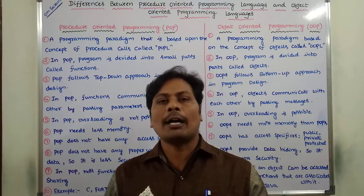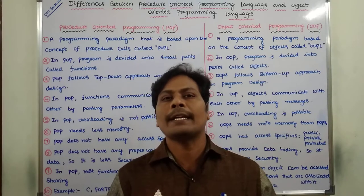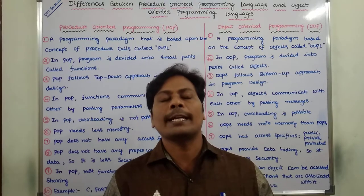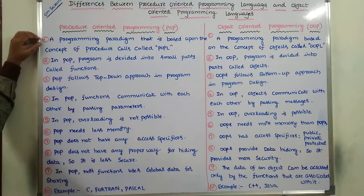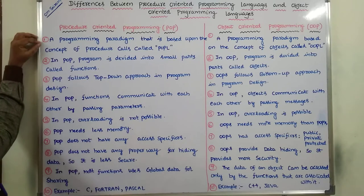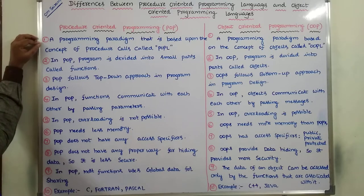The first difference: POPL is a programming paradigm that is based upon the concept of procedure calls. In the case of Procedure Oriented Programming Language, to develop any application or a program, we have to use procedures or functions. That type of programming paradigm is called Procedure Oriented Programming Language.